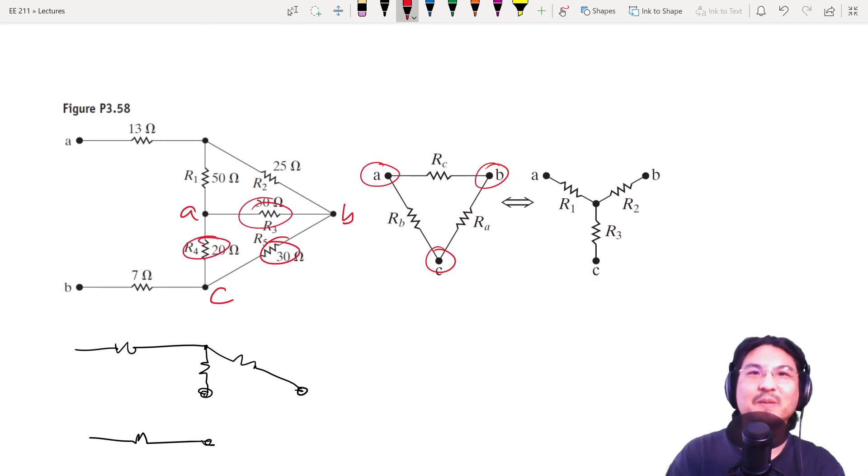...with a Y, like this, there. This was R1, R2, R3.